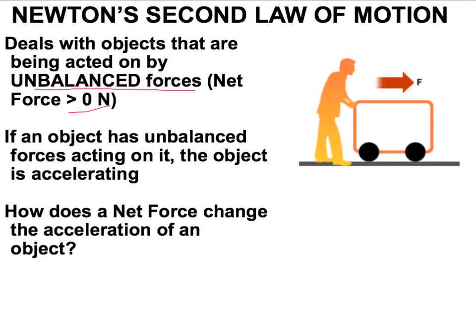If the force was balanced, either the object would be moving at a uniform speed or a constant speed in a straight line, or it would be at rest. So Newton's question was really, how does a net force change the acceleration of an object? And that brings us to Newton's second law.